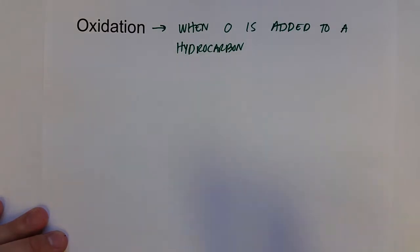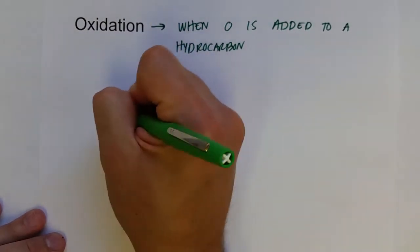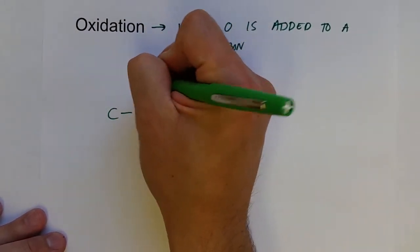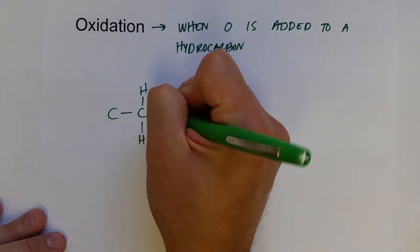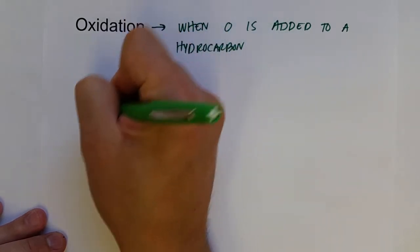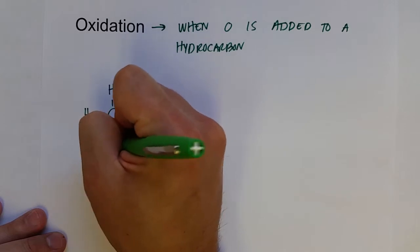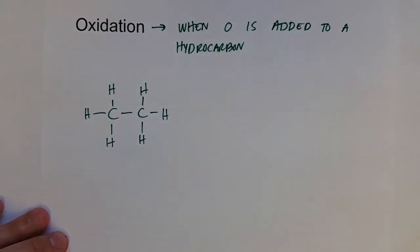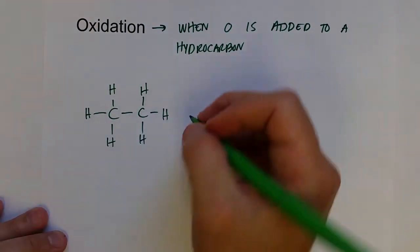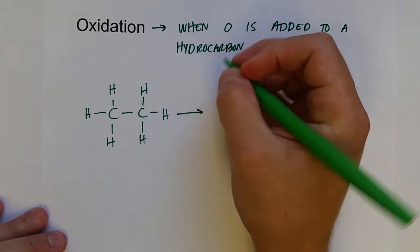And so we can start out again with a very simple hydrocarbon ethane, which doesn't have any oxygens. If we were to add one oxygen,